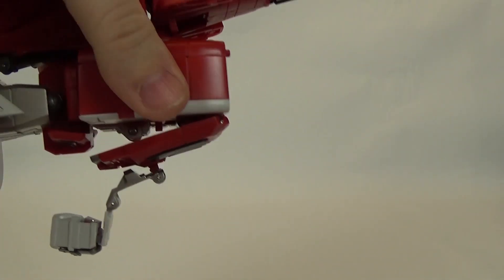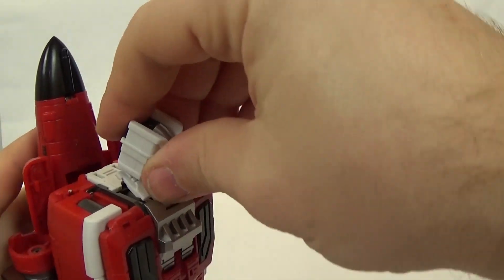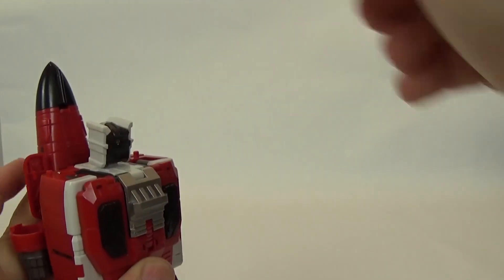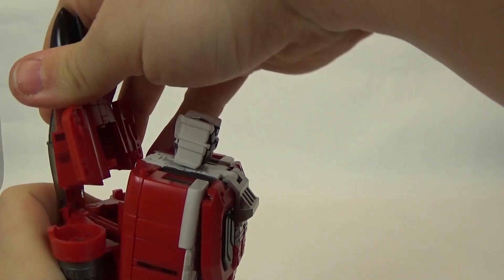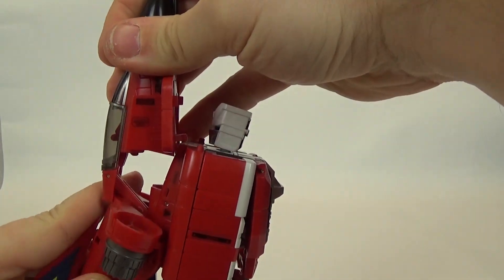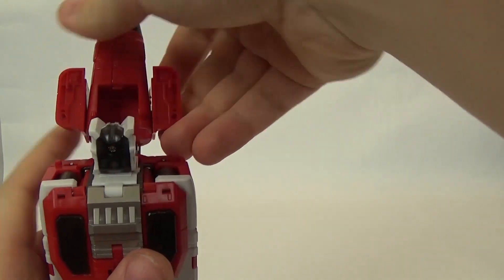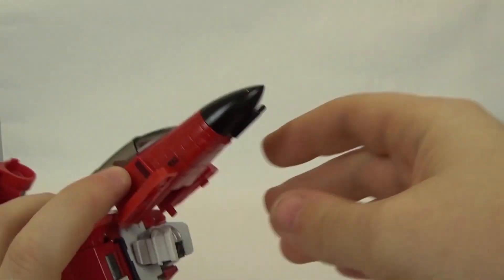We can go ahead and put the head back on, rotate that around. And, then, we'll bring this front part of the jet up. And, another thing I notice is that the top of the jet keeps wanting to come undone.